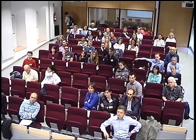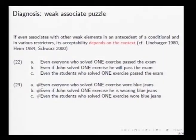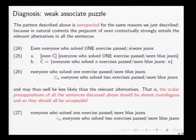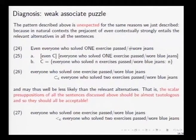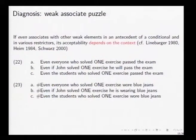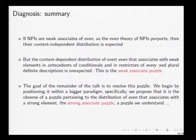But with 'even one' type expressions, we see a contrast that depends on context. 'Everyone who solved even one exercise passed the exam' is fine, but 'everyone who solved even one exercise wore blue jeans' is odd, unless you have appropriate expectations about wearing blue jeans. Yet as we've just seen, in all natural contexts the prejacent 'everyone who solved one exercise wore blue jeans' entails the alternatives. So we should expect an almost tautological presupposition, just like with NPIs. But we don't — this is the weak associate puzzle: we understand NPI distribution but not the distribution of overt 'even' with weak elements.